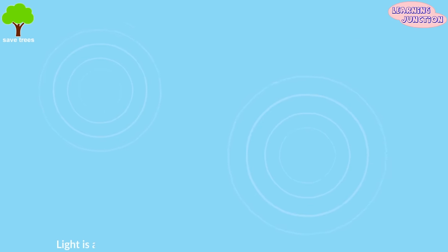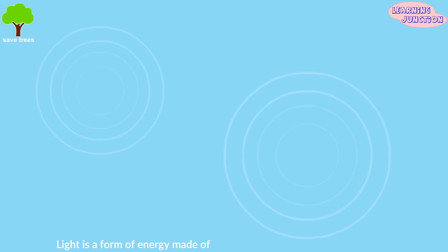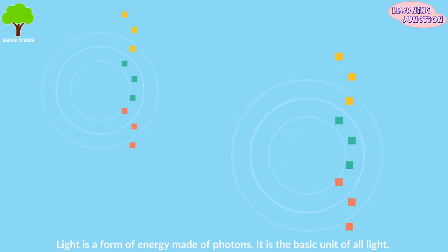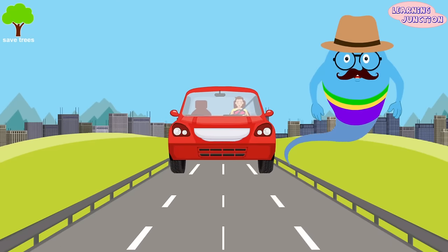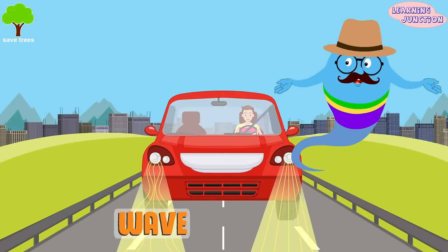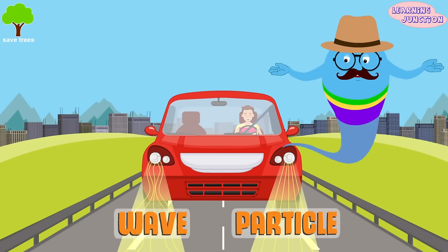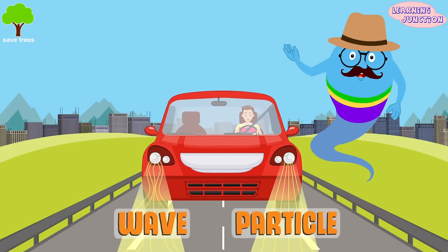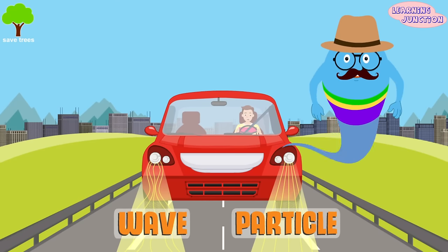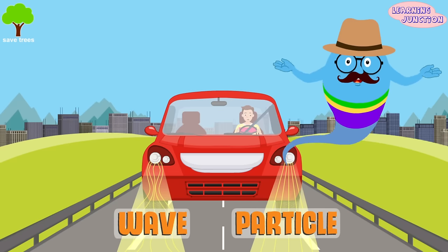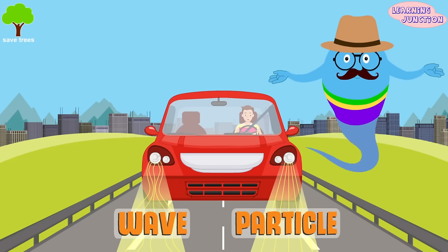It's a form of energy made of photons, which is the basic unit of all light. Light acts like both a wave and a particle. Depending on the kind of matter it comes into contact with, light will act differently.